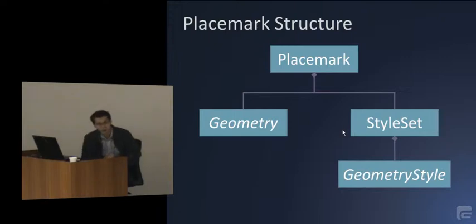So what makes up a placemark? A placemark consists of these few parts. The structure of the diagram is: a placemark has a geometry, has a style set, the style set has a geometry style. So the placemark object itself just stores the raw information. So the name of the placemark, the description of the placemark, and the content of the placemark. At this point, if you just have the placemark alone, you don't know where it is. This is specified in the geometry.